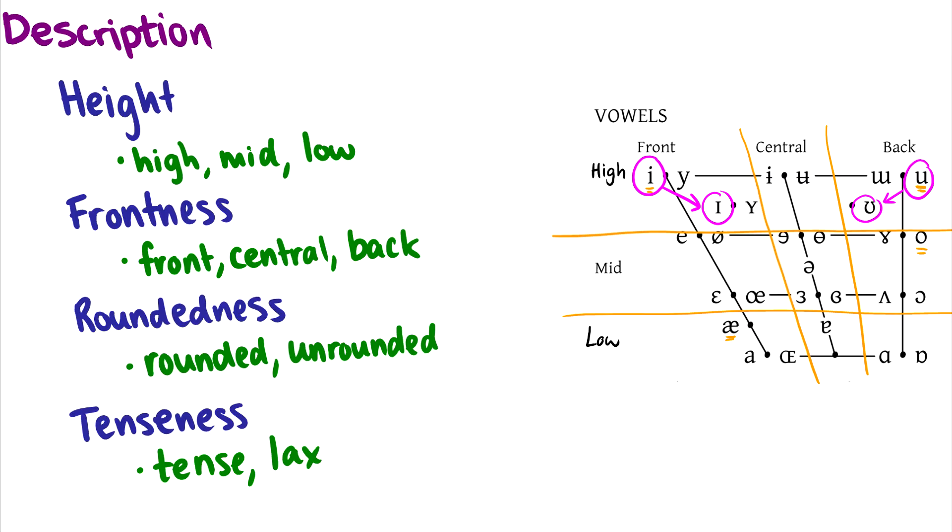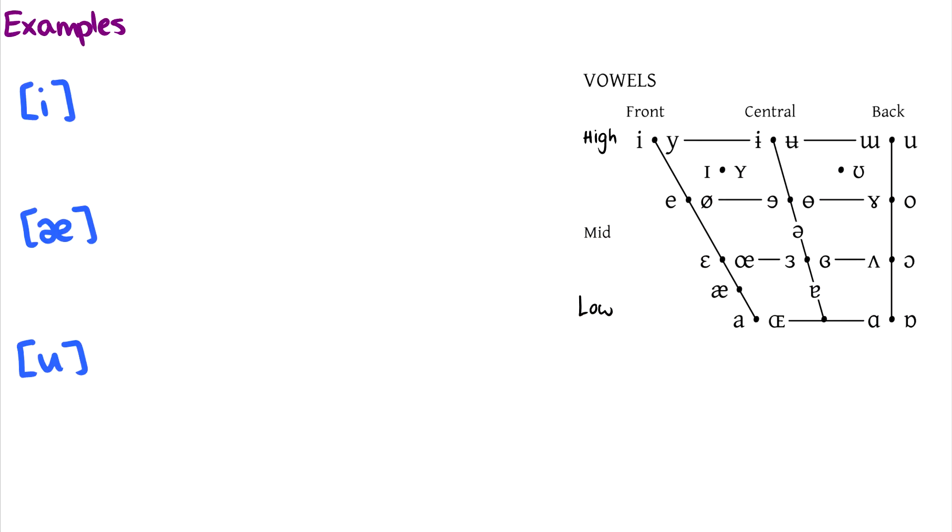We can describe every single vowel with these four different properties. So just looking at the vowel chart, let's do some practice. For instance, the first one I want to describe is ee. So the first thing we talk about is height. This is a high vowel. Then we talk about how forward the tongue is. So it's high and it's front. Then we talk about roundedness. When you make the sound ee, it is unrounded. And it is also a tense vowel. So we could call this ee, the high front unrounded tense vowel.